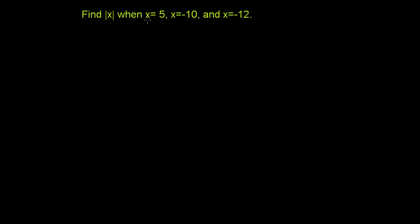Find the absolute value of x when x is equal to 5, x is equal to negative 10, and x is equal to negative 12. So the absolute value, the way of writing it is almost more complicated than what it really is. The absolute value is really just the distance of x from 0.